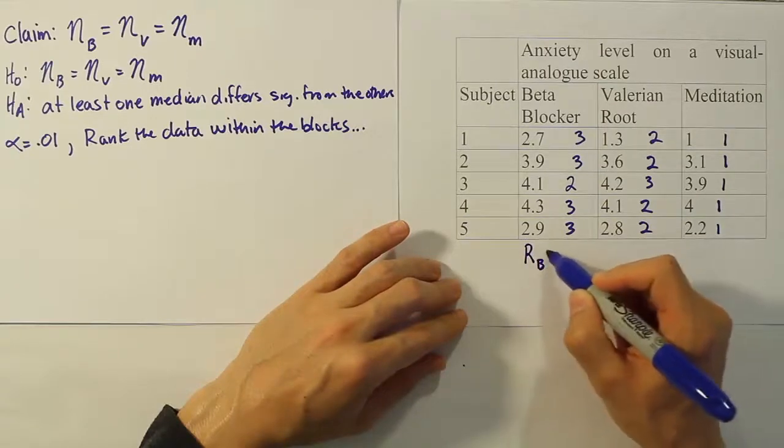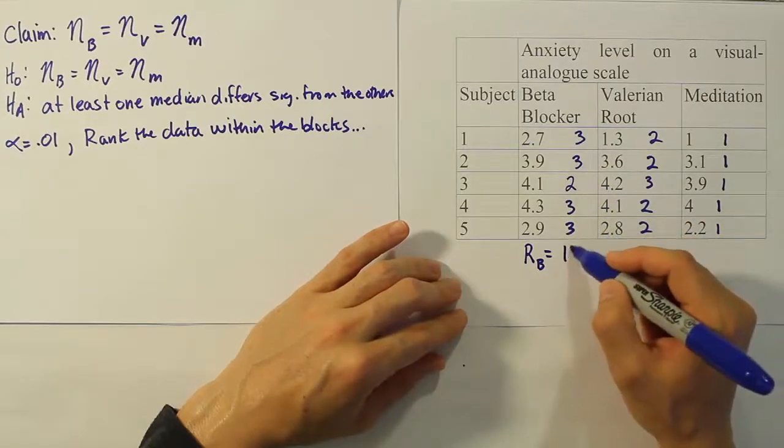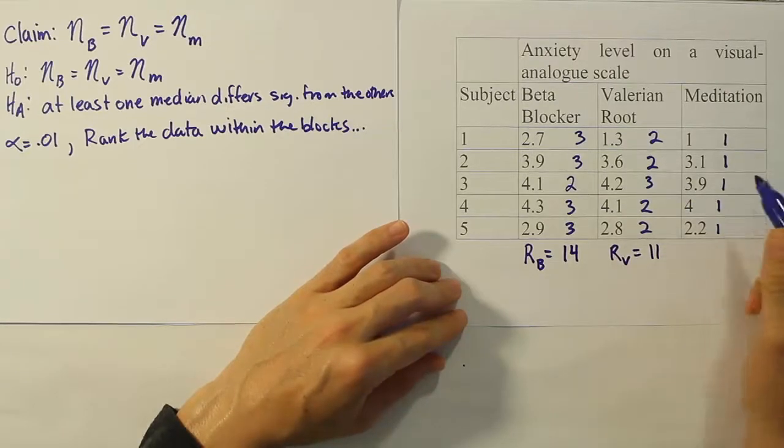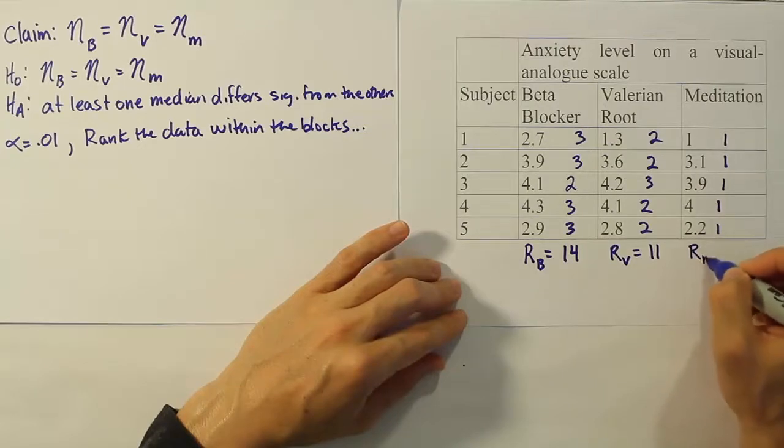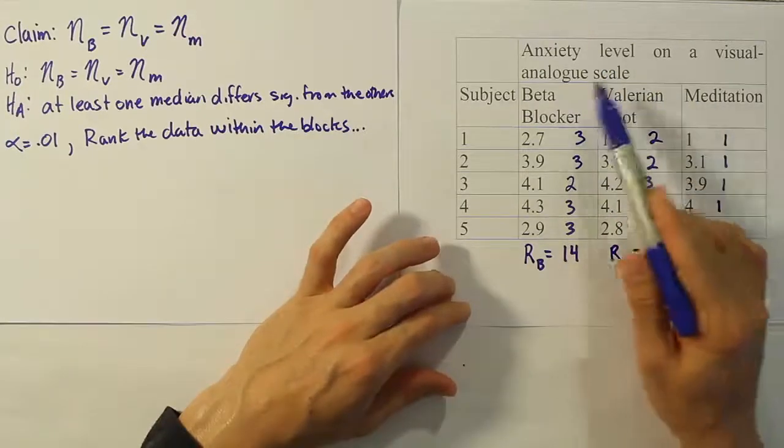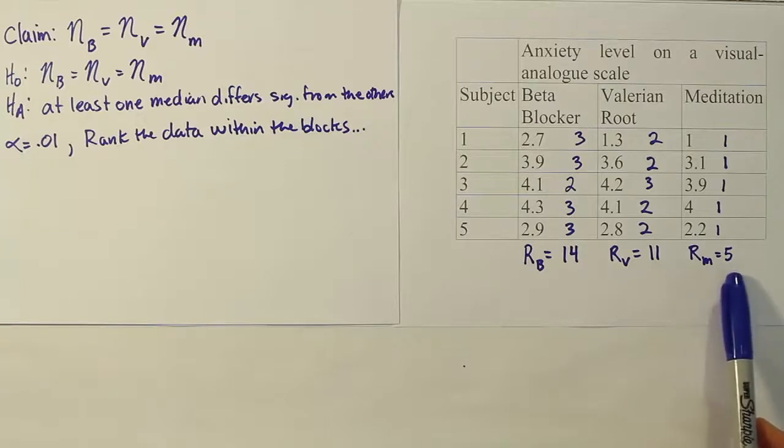Now we're going to get the rank total. Let's get the rank totals for the beta blocker category. That's 6, then another 5 makes 11, and then 11 and 3 make 14. Then we'll do the same here. We have 2, 4, 6, 8, plus 3 is 11. And then lastly we have 1, 2, 3, 4, 5. So the rank for the meditation category is 5. This is an anxiety level on a visual analog scale. So after taking the treatment, that's the resulting anxiety level. You can see that the smallest rank total is the meditation value. So that would mean that it produces the least amount of anxiety. But of course we have to know if that's a significant difference. And that's why we run the hypothesis test.